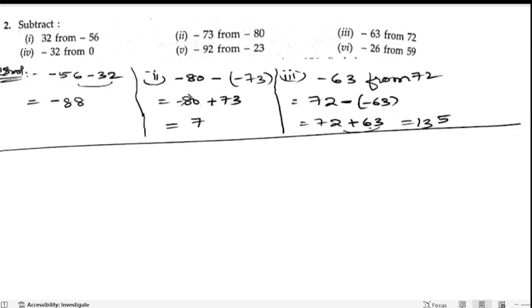Next, we are having fourth bit: -32 from 0. So 0 comes first, minus for the subtraction, and -32 is the number. So 0 minus minus is plus, so 0 plus 32 is 32.